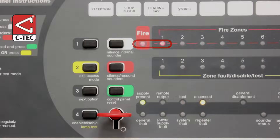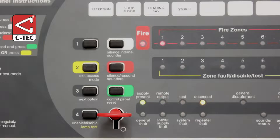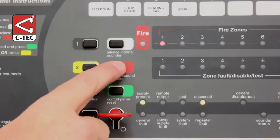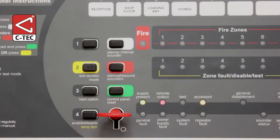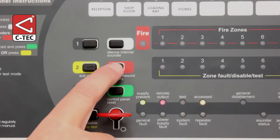The remote output indicator will also turn off. If for any reason you need to manually reactivate the alarm sounders, press the silence/resound sounders button once again. Likewise, to again silence the sounders, press the silence/resound sounders button once more.